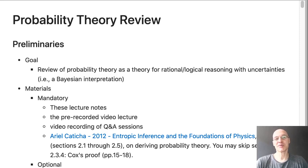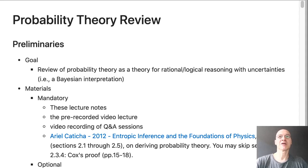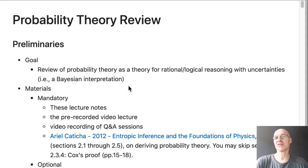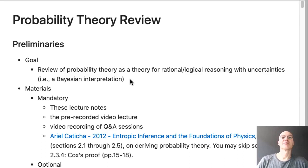This is the same probability theory as before. The probability theory calculus rules are the same in this class as before, so nothing new — that's why the title of this chapter is called 'Probability Theory Review.' The goal is to review probability theory as a theory for rational or logical reasoning with uncertainties, and that's called the Bayesian interpretation, which we're going to talk about a bit more.